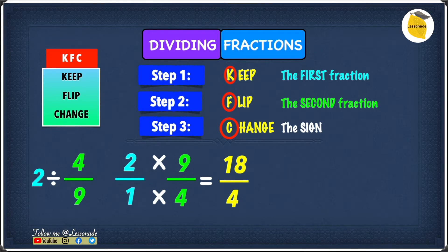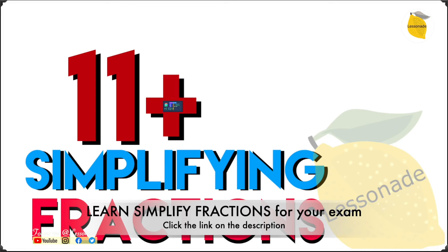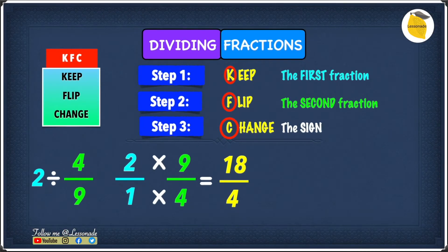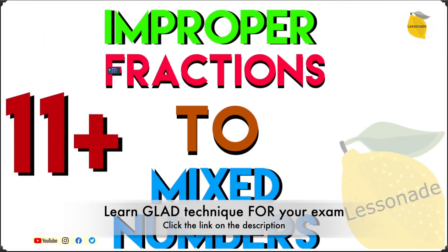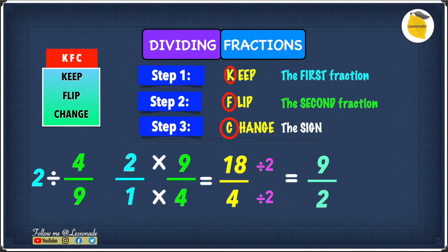Once we've found the HCF, we simplify 18 over 4 by dividing by 2. If you also want to know how to simplify fractions, I've got another video on that too. So 18 divided by 2 gives 9, and 4 divided by 2 gives 2, giving us 9 over 2. However, 9 over 2 is an improper fraction, so we change it into a mixed number. I've got another video on how to convert improper fractions into mixed numbers, so go check that out.